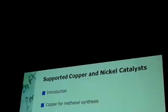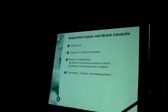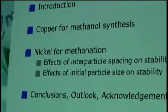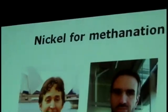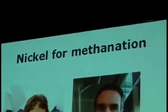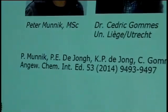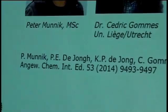The second example is nickel for methanation. We felt that inter-particle spacing would be crucial, so we started to vary the inter-particle spacing and also varied the initial particle size. This is work from Peter Munnik in cooperation with Dr. Sidney Colmest from the University of Leuven, Belgium, published last year. We used our knowledge on metal nitrate chemistry developed over the years to control size and distribution.